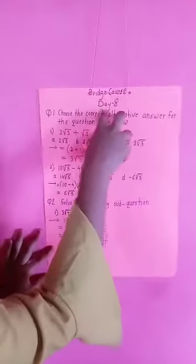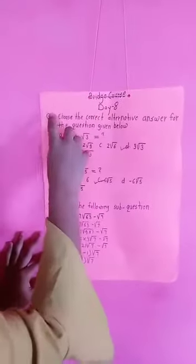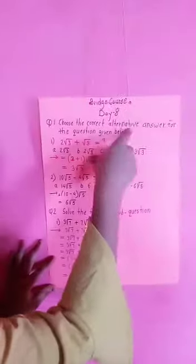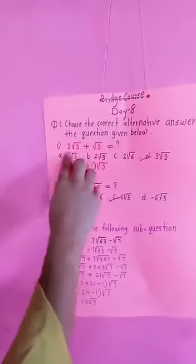My name is Kushane Sharma, studying in 10th B from Shree Kreya Madhyamik. Today's topic is Bridge Course Day 8, Question Number 1: Choose the correct alternative to answer for the questions given below.